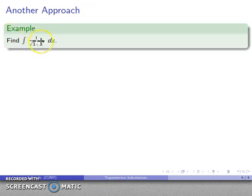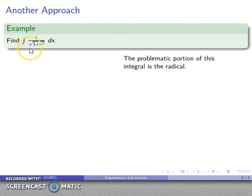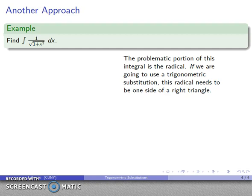For example consider the antiderivative 1 over square root 1 plus x squared. Now the problematic portion of this integral is this radical right here, square root 1 plus x squared. And so we might reason as follows.